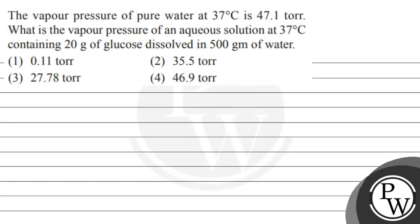Hello, let's read this question. The vapor pressure of pure water at 37 degrees Celsius is 47.1 torr. What is the vapor pressure of an aqueous solution at 37 degrees Celsius containing 20 grams of glucose dissolved in 500 grams of water? The options given are 0.11 torr, 35.5 torr, 27.78 torr, and 46.9 torr.